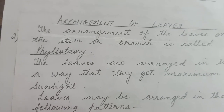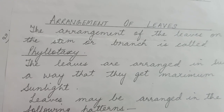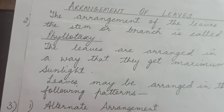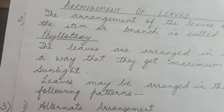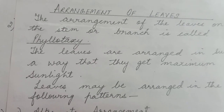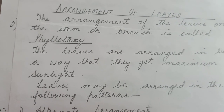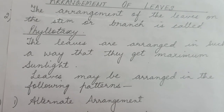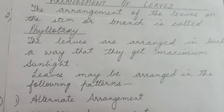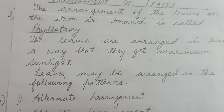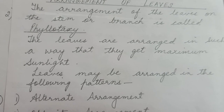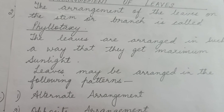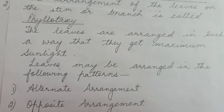Now we come to the next part of the assignment, which is the arrangement of leaves. The arrangement of leaves on the stem or branch is called phyllotaxy. This term is new for you, so you have to learn that the arrangement of leaves on the stem or branch is called phyllotaxy. The leaves are arranged in a way that they get maximum sunlight so that they can prepare food for the whole plant.